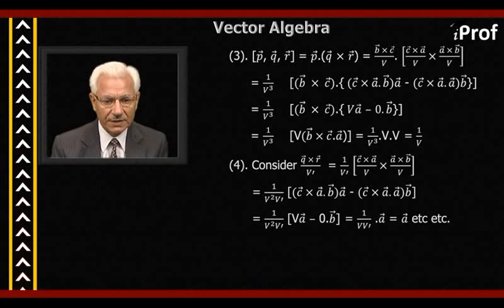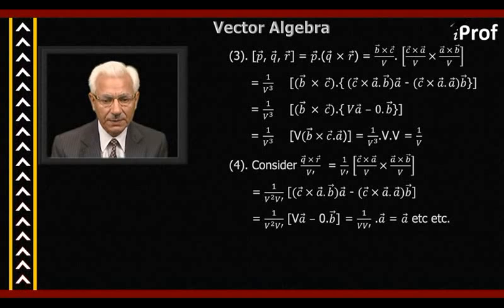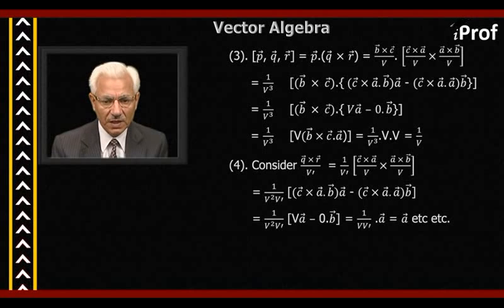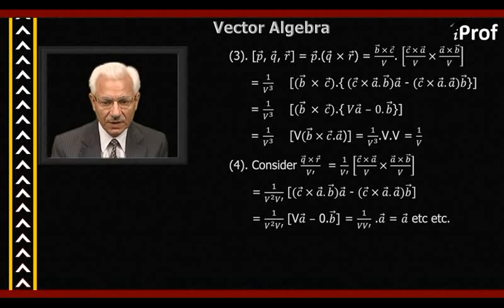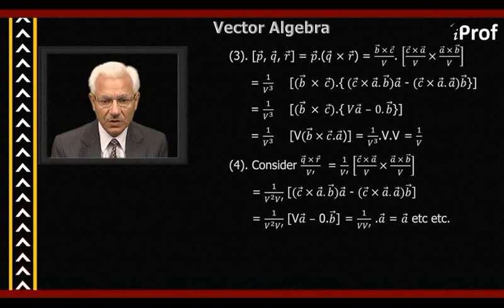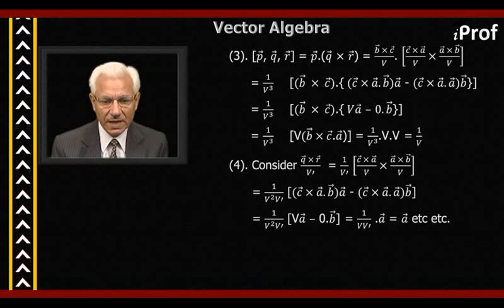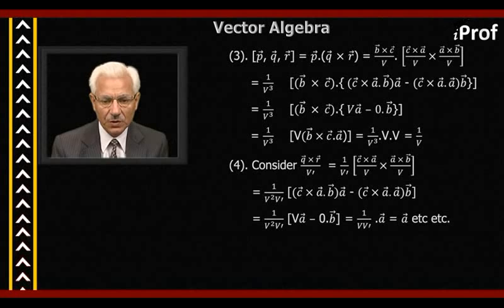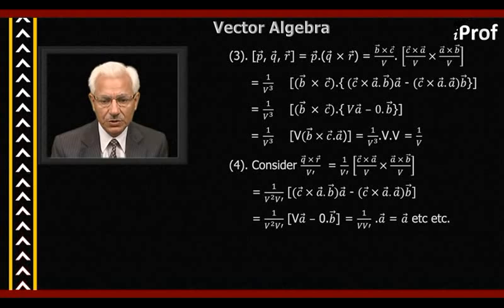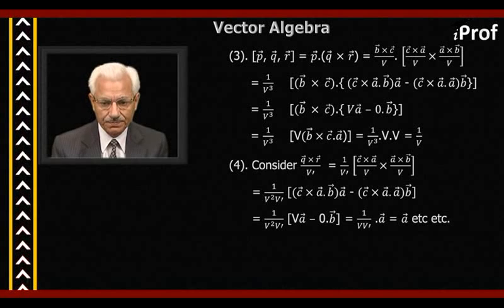Fourth, consider Q cross R divided by V dash. Pulling out 1 by V dash and substituting the values of Q and R, we get (C cross A)/V cross (A cross B)/V, that is 1 upon V squared into V dash, expanding (C cross A) cross (A cross B): C cross A dot B into A minus C cross A dot A into B. C cross A dot A becomes zero, and C cross A dot B becomes V, so it becomes 1 upon V squared V dash times V into A, which is 1 upon V·V dash times A. Since V·V dash equals one, this becomes the vector A. That proves the result.